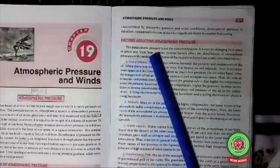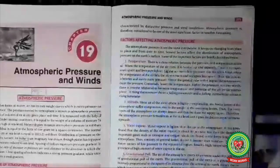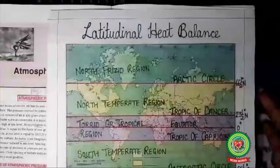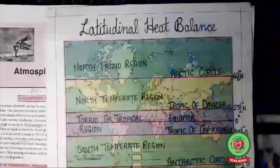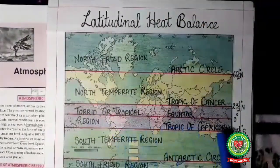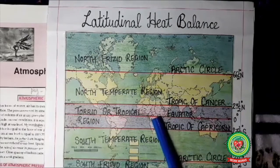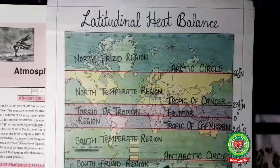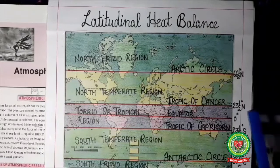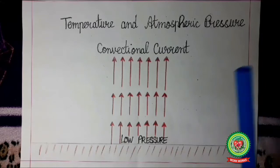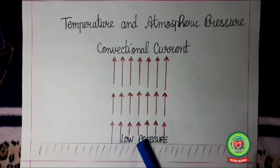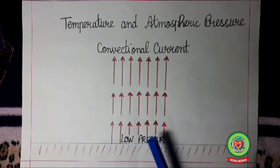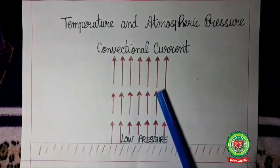Now we will discuss the factors affecting atmospheric pressure. The first factor is temperature. Places near the equator, in the tropical zone, receive direct rays of the sun, so they have the highest temperature. As we move away from the equator towards the poles, temperature decreases. During daytime, due to direct rays of the sun, the earth's surface is intensely heated. The air above the earth's surface — the lowest layer of the atmosphere — is heated by conduction. This heated air expands, becomes light in weight, and rises in the form of convection currents, also called air currents.